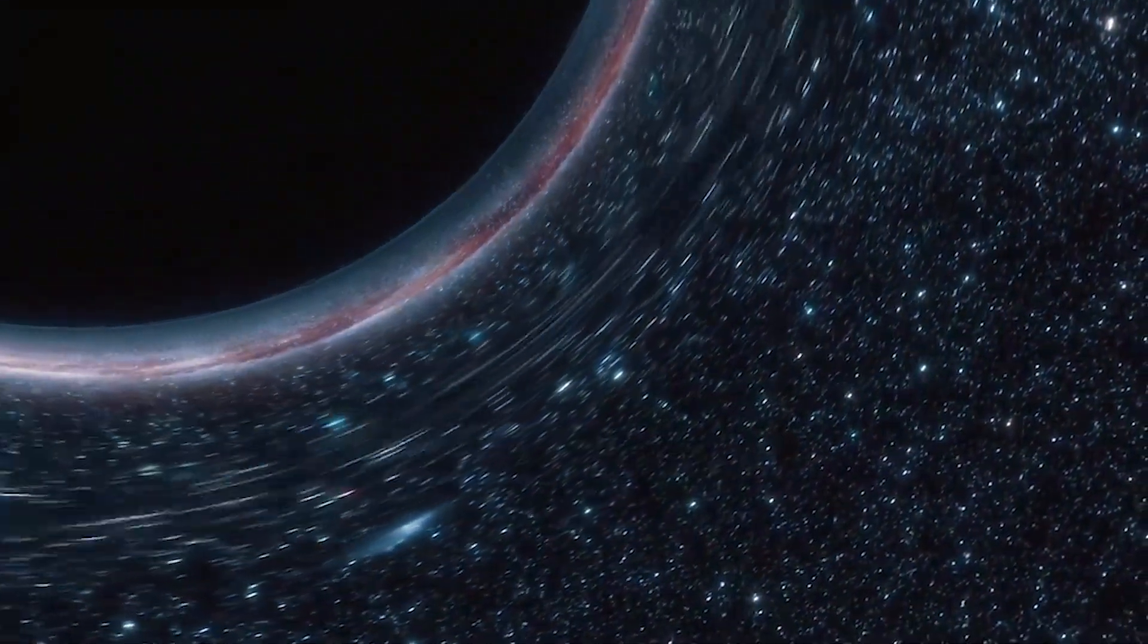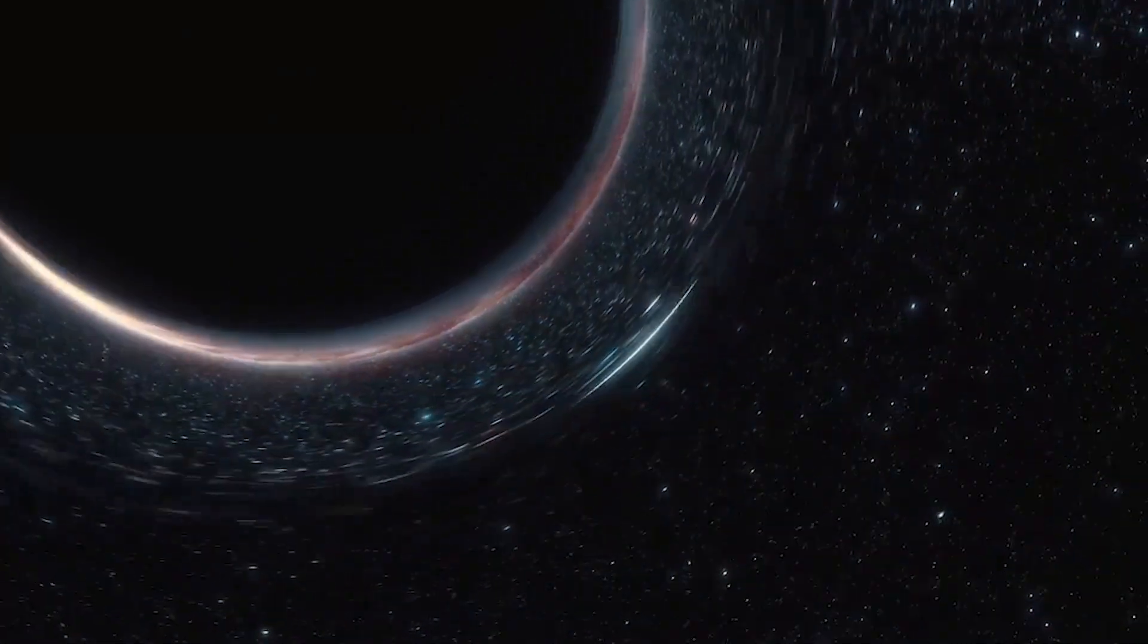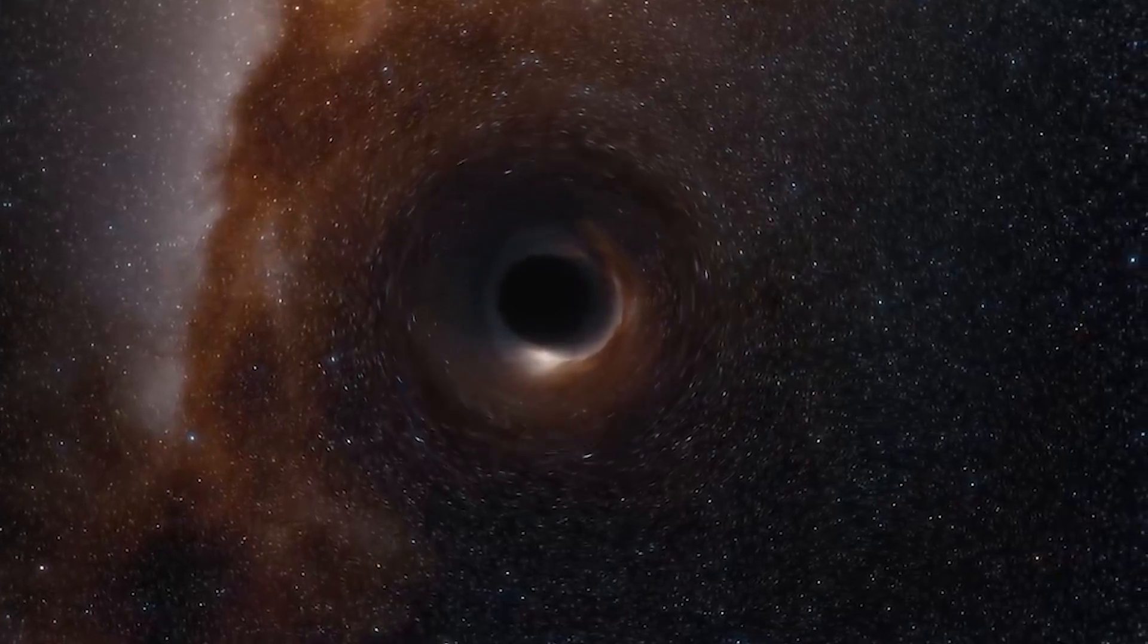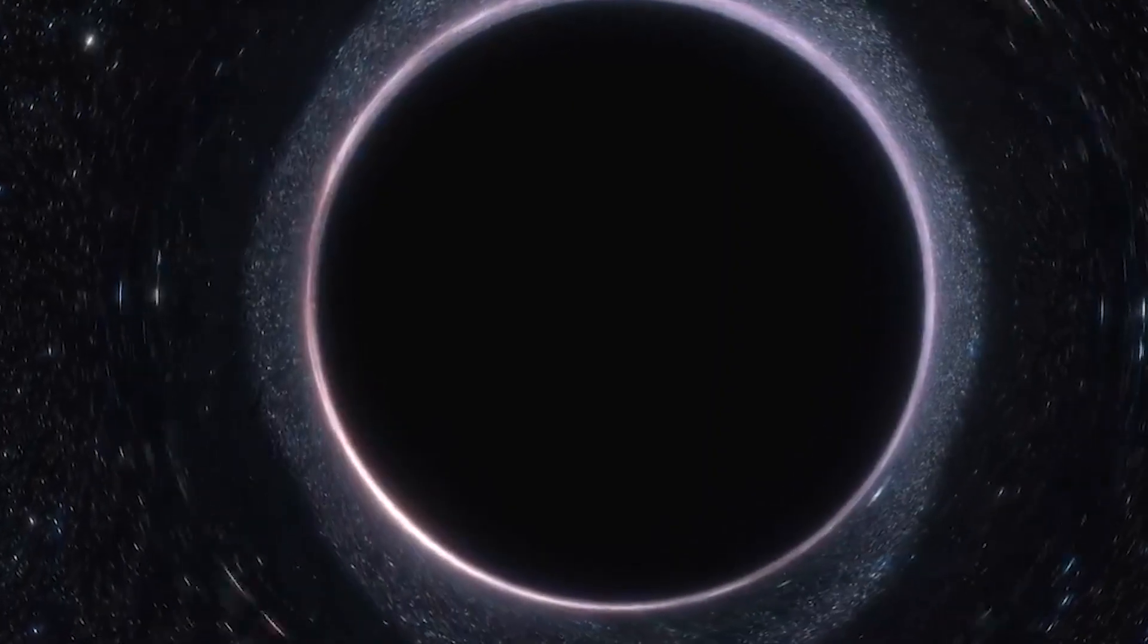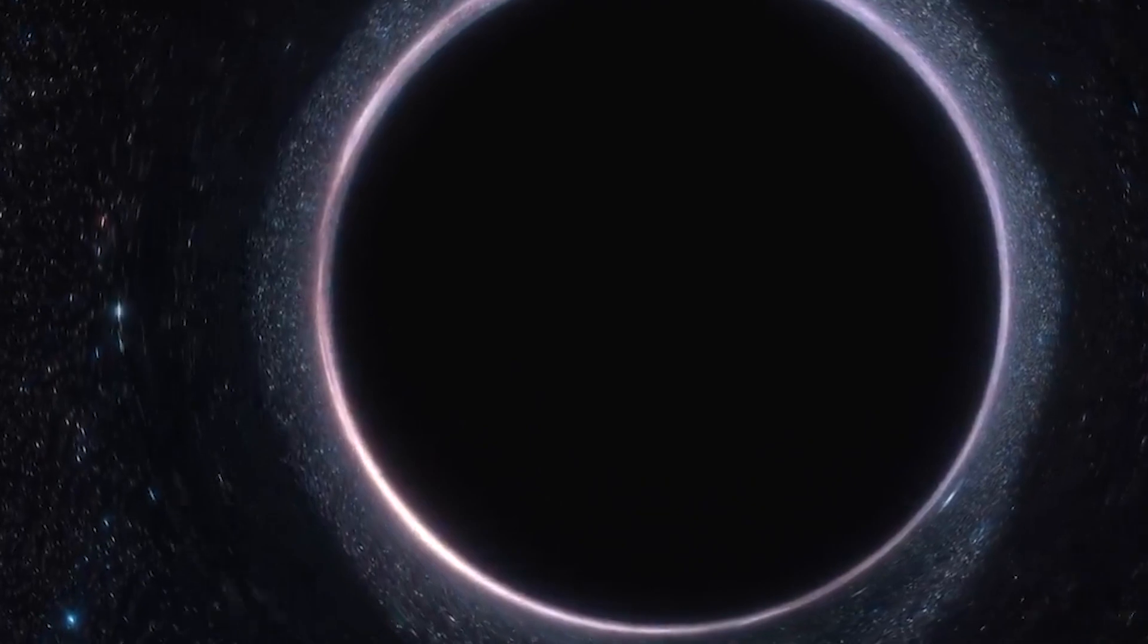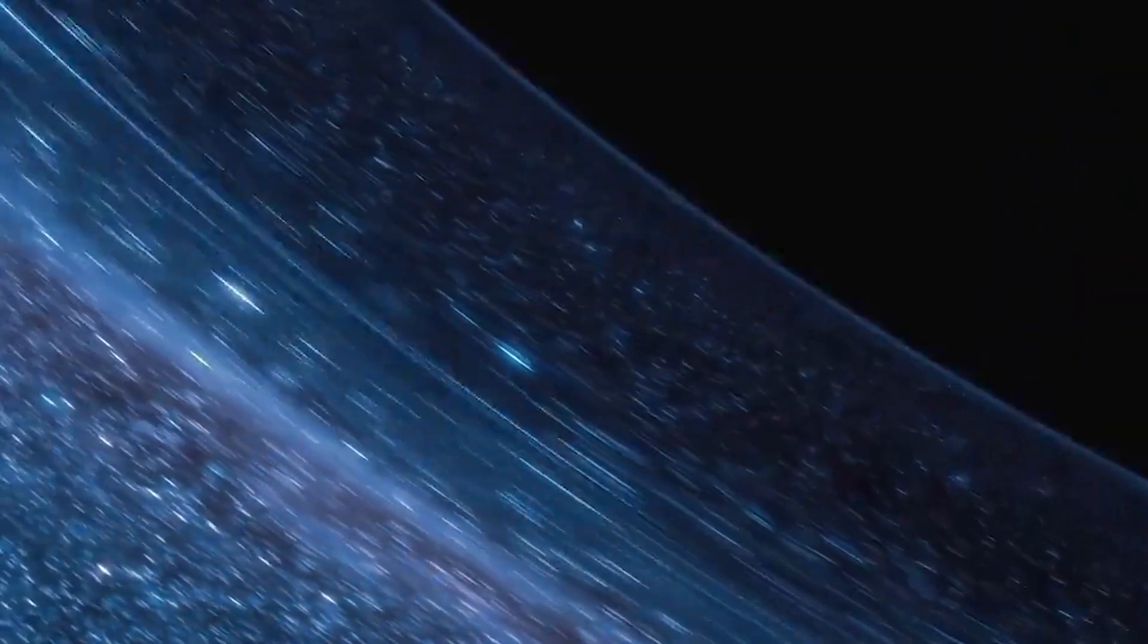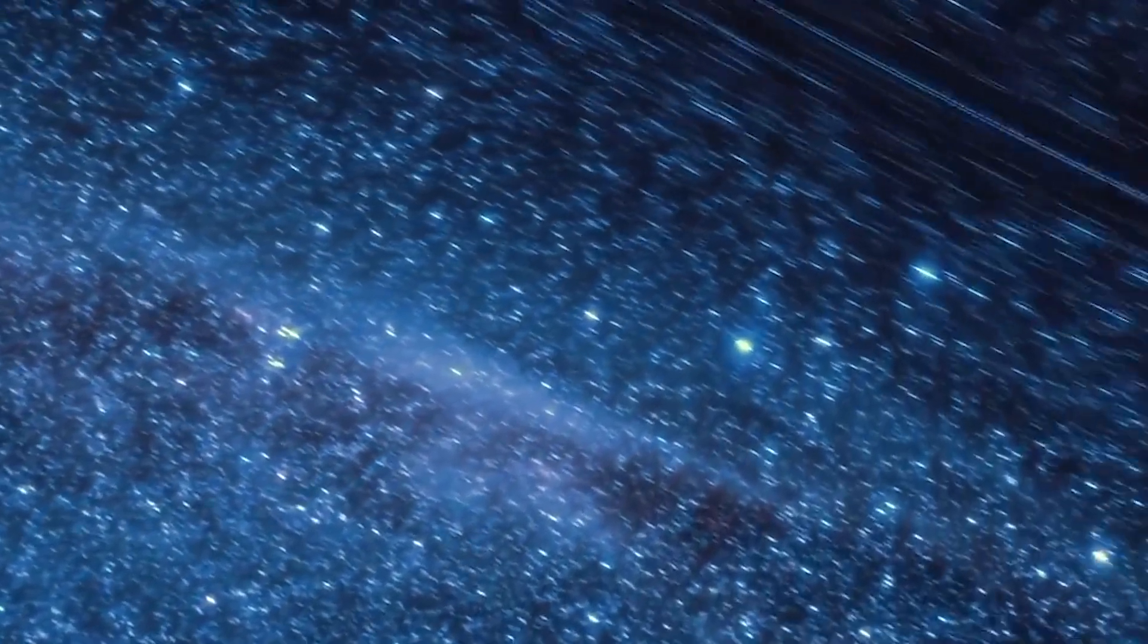Black holes can also cause tidal disruption and destruction which would destroy planets and stars. When a black hole passes near a star, the gravity of the black hole pulls on the star. This can cause tidal disruption in which parts of the star are ripped off by gravity and pulled into the black hole.